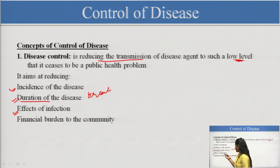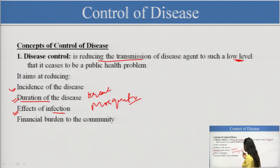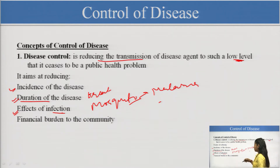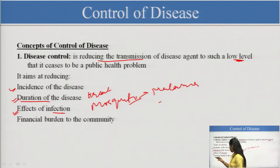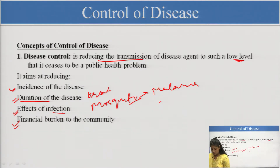Regarding the effects of infection, we can eliminate the agent. If a mosquito is causing any infection — for example, mosquito causing malaria — we are eliminating these vectors and implementing treatments. These are some parts under the effects of the infection. If we do all of these things, we can also reduce the financial burden of the community. So controlling is very important.